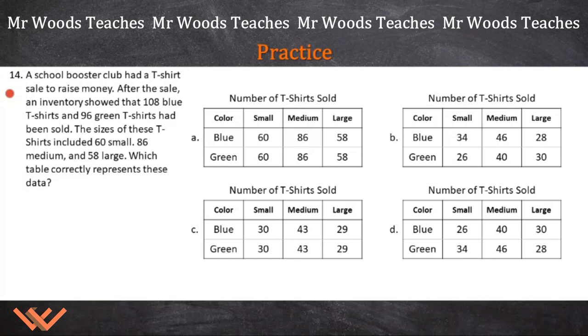14. A school booster club had a t-shirt sale to raise money. After the sale, an inventory showed that 108 blue t-shirts and 96 green t-shirts had been sold. The sizes of these t-shirts included 60 small, 86 medium, and 58 large. What we can do is take a look at this here and we're looking at these numbers and we want to add it across. So there's 60 plus 50, let's say that's 120. That's 200. So this one just cannot do it because it's over 200 adding just the blue t-shirts up. Let's look over here. 34, 46 and 28. So 34 and 46, that's gonna be 70, 80. There's 108. So that's 108.